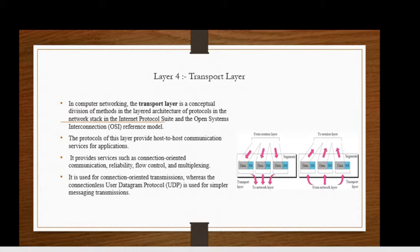OSI reference model. The protocol of this layer provides host-to-host communication services for applications. It provides services such as connection-oriented communications, reliability, flow control, and multiplexing. TCP is used for connection-oriented transmission whereas the connectionless User Datagram Protocol UDP is used for simple messaging transmissions. The reference to this layer is given in the diagram.